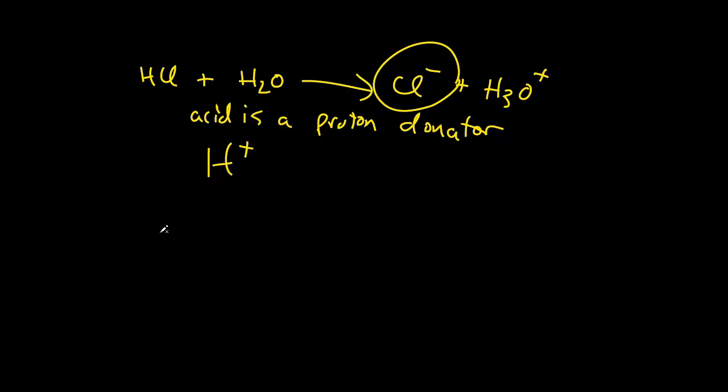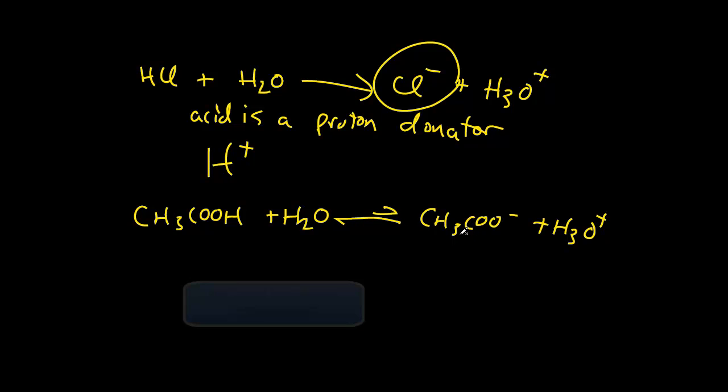What if we had something like acetic acid, which is CH3COOH plus H2O to yield in water acetate ion plus H3O+. Well, what we find in this case is that it's a weak acid because it doesn't disassociate completely in water like hydrochloric acid does.